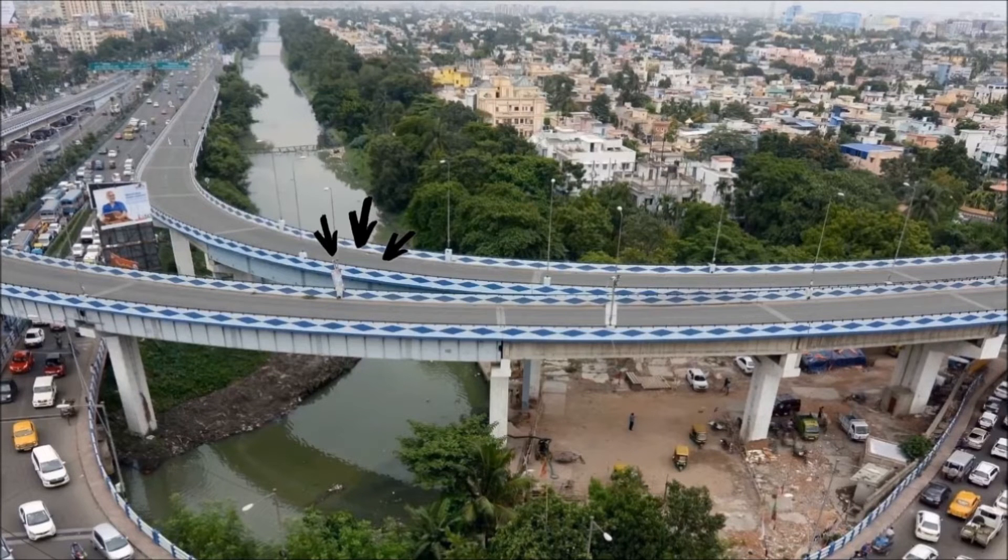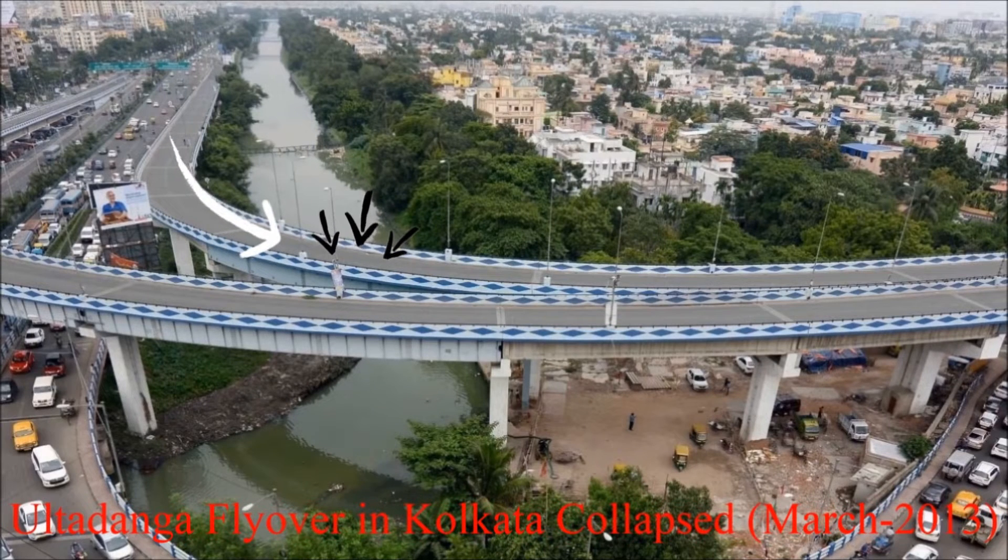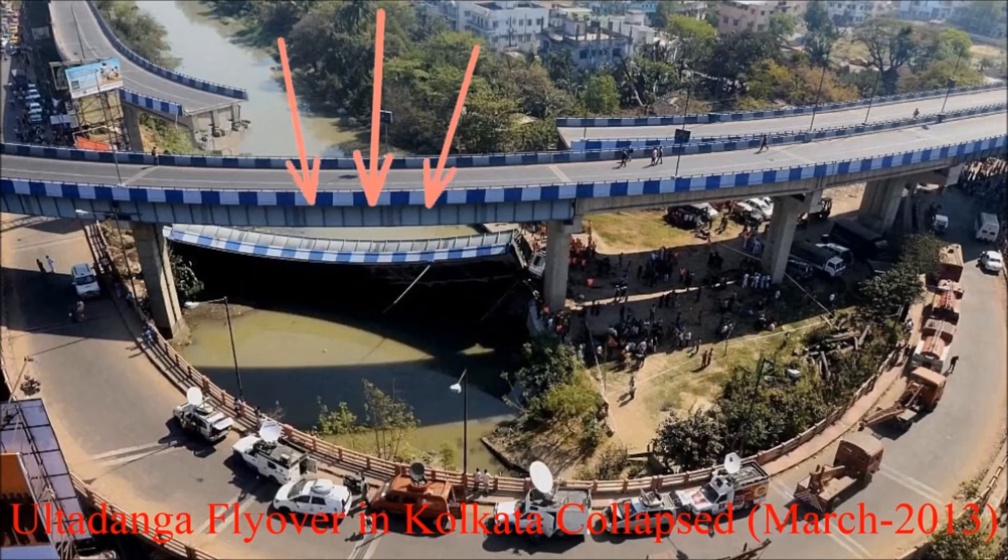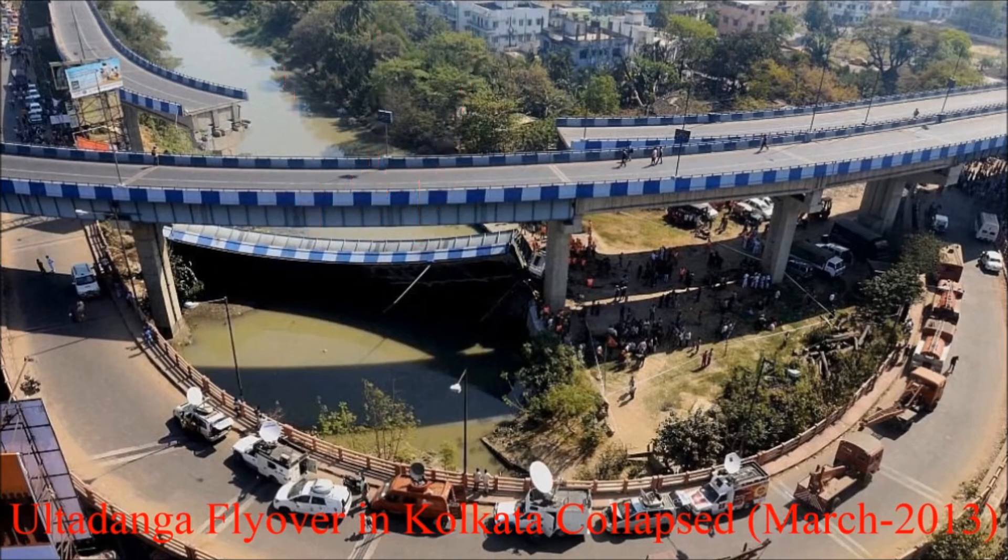By this effect, the Ultadanga flyover at Kolkata collapsed in March 2013 while a heavy goods truck crossed the flyover under the curved stretch. The bearings under the 40-meter steel girders at the curve couldn't resist the centrifugal action and crashed into the canal 7 meters below.